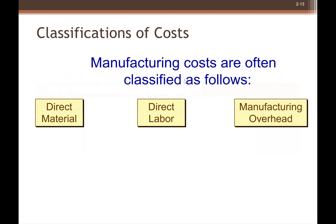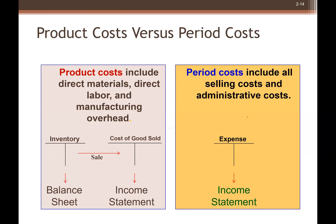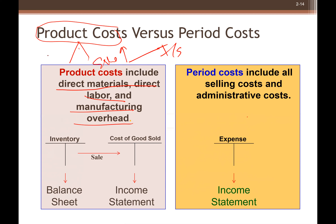Now we move to our second learning objective: distinguishing between product cost and period cost. We discussed cost classification with respect to manufacturing. Now we classify with respect to product and period cost, which is also related to time. Product cost includes all manufacturing costs — direct material, direct labor, and manufacturing overhead.